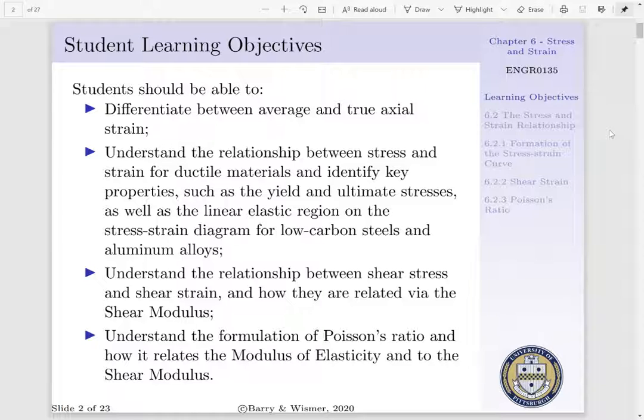You should be able to understand the relationship between stress and strain for ductile materials and also identify key properties of these materials, such as the yield stress, ultimate stress, as well as the linear elastic region on the stress-strain diagram for both low-carbon steels and aluminum alloys.